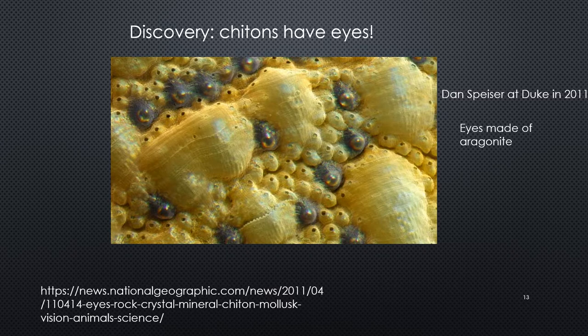I couldn't move on from chitons without sharing some neat information actually discovered at Duke right down the road in 2011. It turns out that these chitons actually have eyes, and their eyes are made up of what we call aragonite, which is actually like a rock or crystal. As you can see in this image, they have lots of these dark eyes. Prior to that discovery we didn't even know they had that, but they do have a rudimentary eyesight.